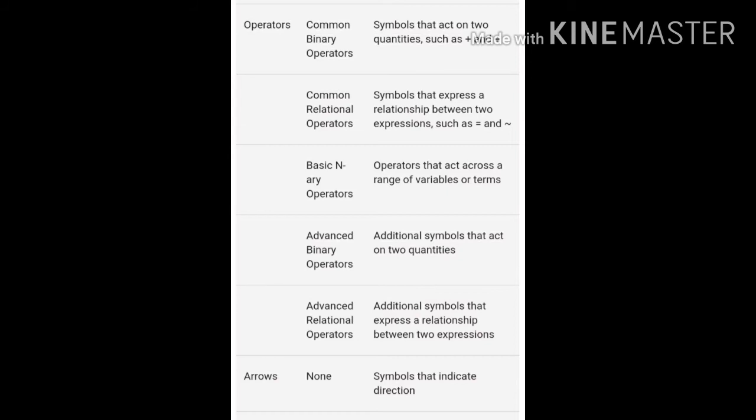Next, Basic Binary Operators — operators that act across a range of variables or terms. Advanced Binary Operators — additional symbols that act on two quantities. Last one, Advanced Relational Operators — additional symbols that express a relationship between two expressions. Last, Arrows — subset is none, and these symbols are used to indicate direction.